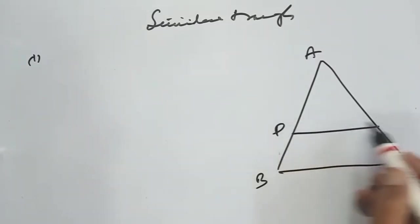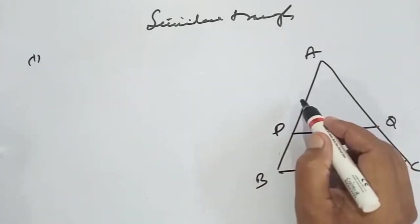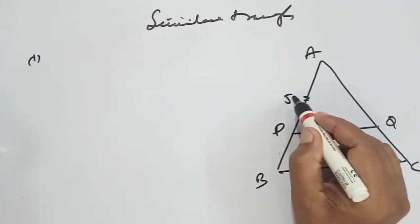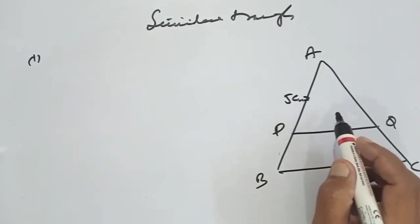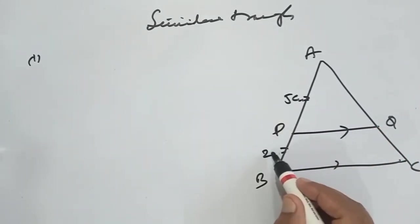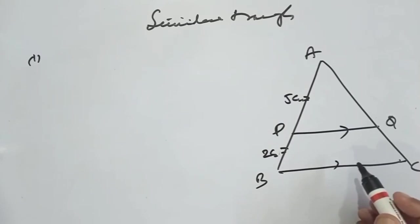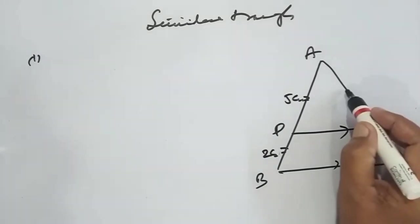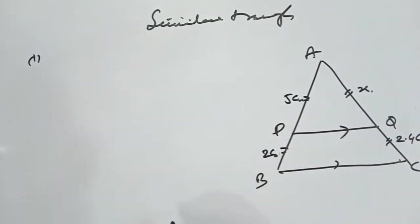Here, PQ is a line drawn to the base. This is 5, this is 2 cm, this is 2.4 cm. This is where we find x. We have to find x.